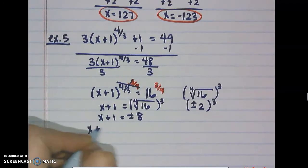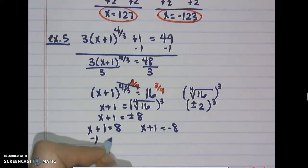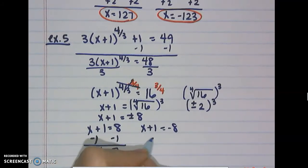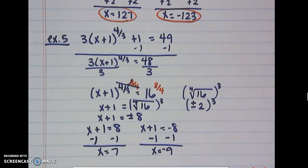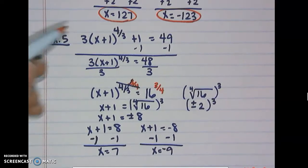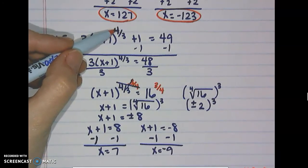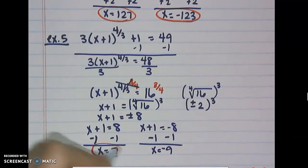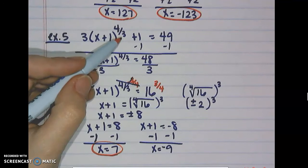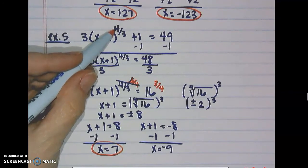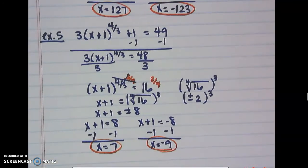Taking ±2 to the third power gives ±8, so we have two cases. Subtracting 1 gives x equals 7 or x equals negative 9. Checking x = 7: 7 plus 1 is 8, cube root of 8 is 2, 2 to the fourth is 16, times 3 is 48, plus 1 is 49. Checking x = -9: negative 9 plus 1 is negative 8, cube root of negative 8 is negative 2, negative 2 to the fourth is positive 16, times 3 is 48, plus 1 is 49. Both work.